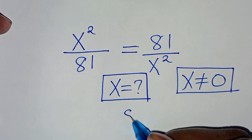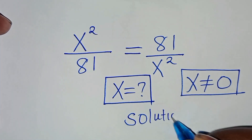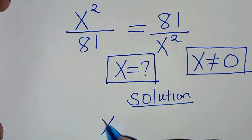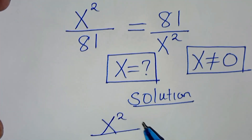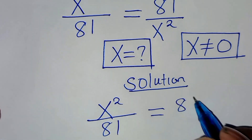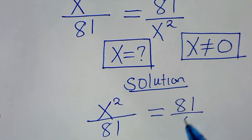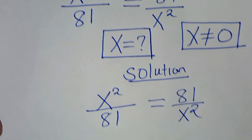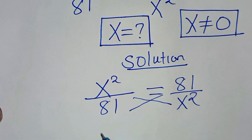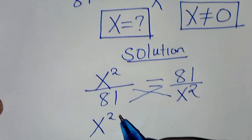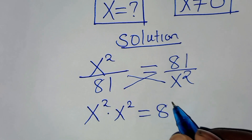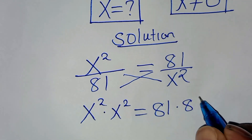So let's present the solution from here. We have x squared over 81, this is equal to 81 over x squared. The first step here is to cross multiply, so that now we have x to the power of 2 times x to the power of 2. This is equal to 81 times 81.